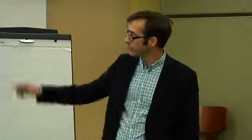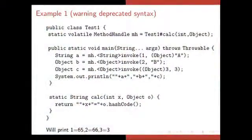So, what is it going to print? It's going to print 1 equals 65, because 65 is a hash code of the string A. 2 equals 66, because 66 is a hash code of string B. And 3 equals 3, because 3 is a hash code of 3 when it's boxed. So, you can see that it automatically took all the incoming arguments and made the necessary changes at runtime to adapt it to the target method that took a primitive and an object.